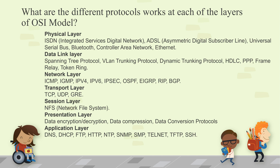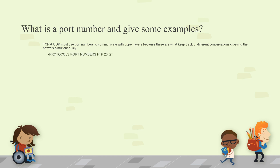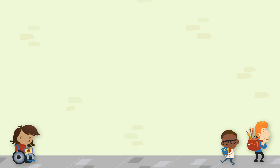We should understand how each protocol works and which layer it fits into. What is a port number? TCP and UDP must use port numbers to communicate with the upper layers, because port numbers keep track of different conversations crossing the network simultaneously. For example: FTP uses ports 20 and 21, Telnet uses 23, SMTP uses 25, DNS uses 53, DHCP uses 67 for server and 68 for client.